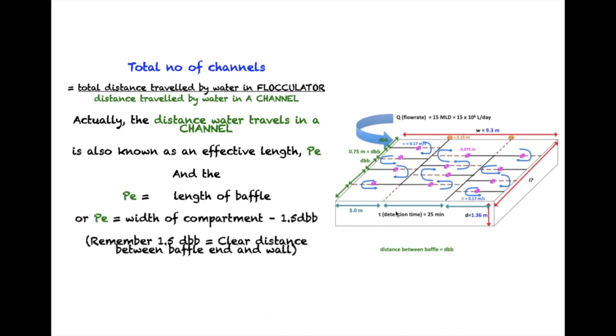And that value, as I have already mentioned in the previous video, is 1.5 distance between baffles. So the PE is the width of compartment minus 1.5 distance between baffles.